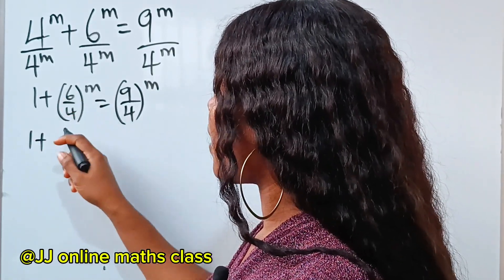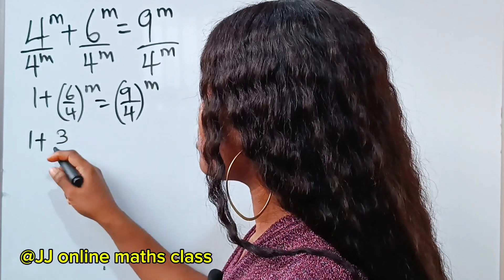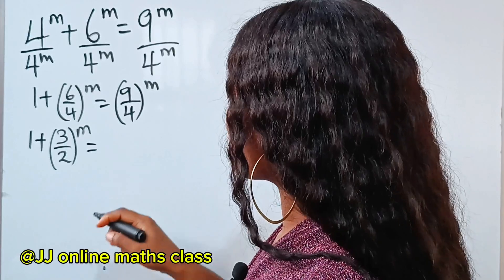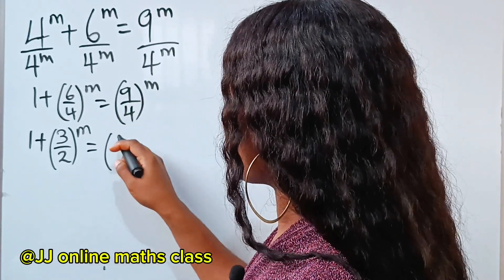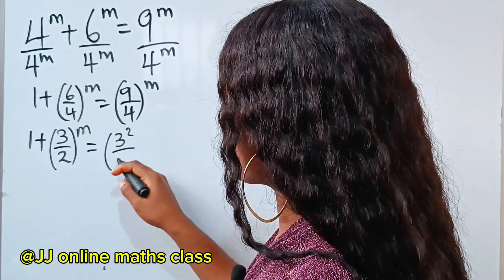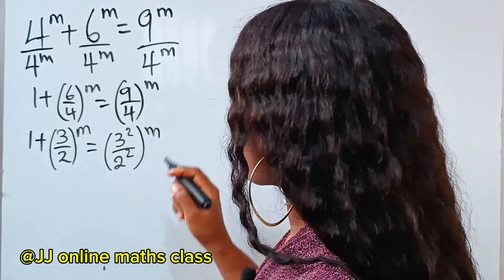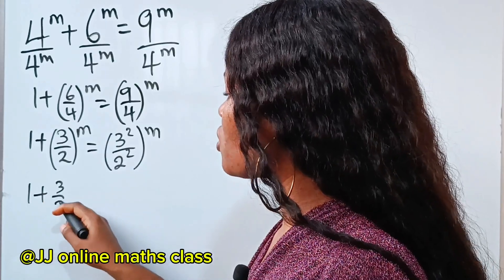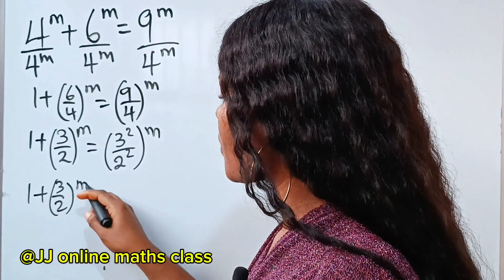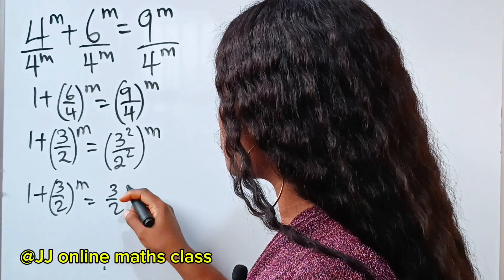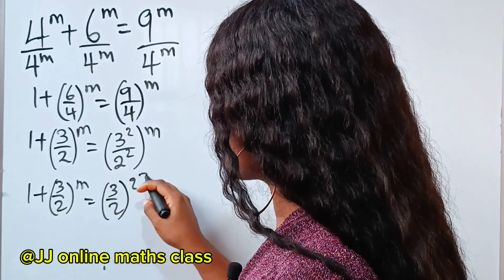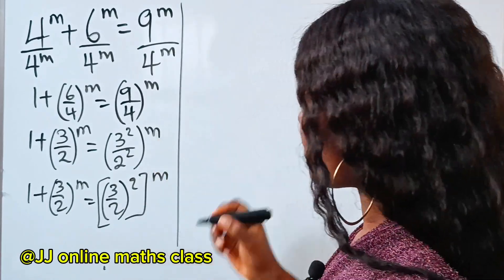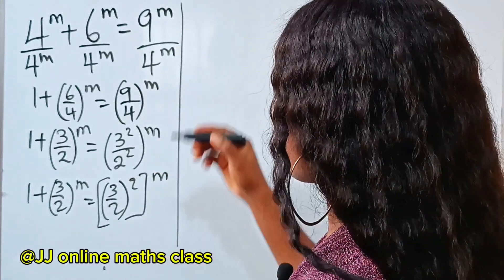Let's reduce this to its lowest terms. When you divide, you have 3 over 2, so this is the same as 3 over 2 to the power of m. And on the right side, 9 over 4 is the same as 3 squared over 2 squared raised to the power of m. So we have 1 plus 3 over 2 to the power of m is equal to 3 over 2 squared to the power of m.